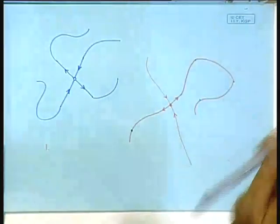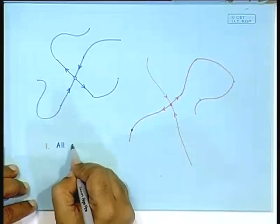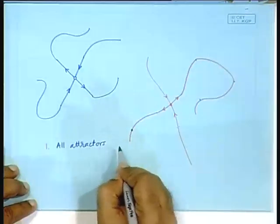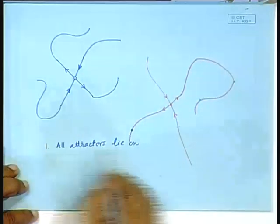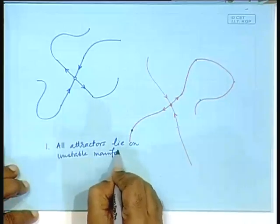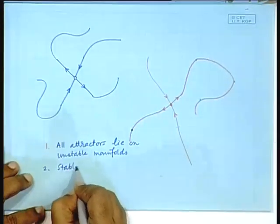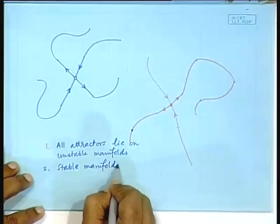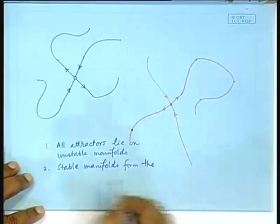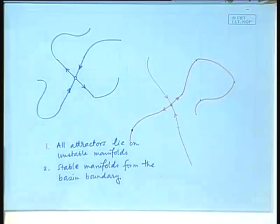Let me write down the first conclusion clearly so that it goes into your head. Stable manifolds form the basin boundary.